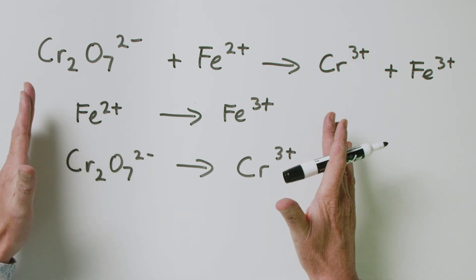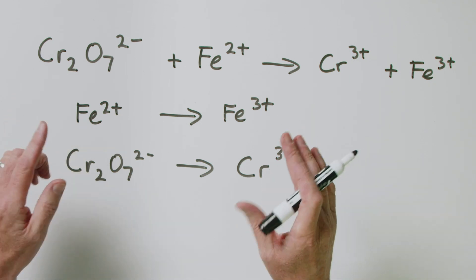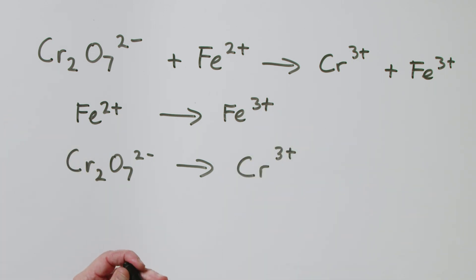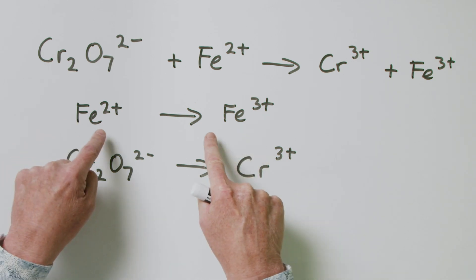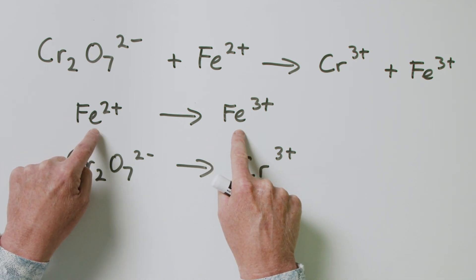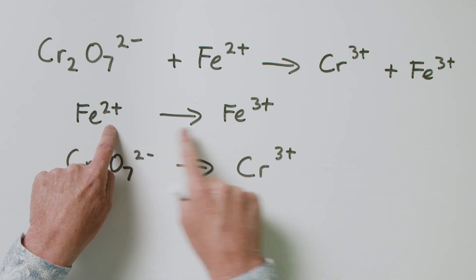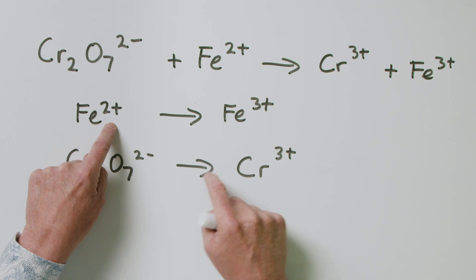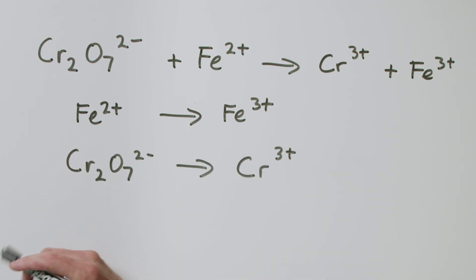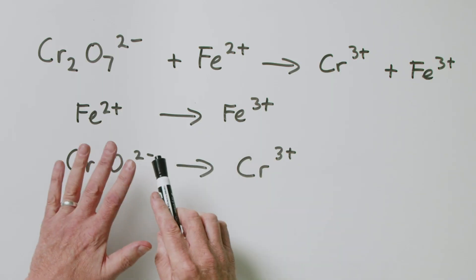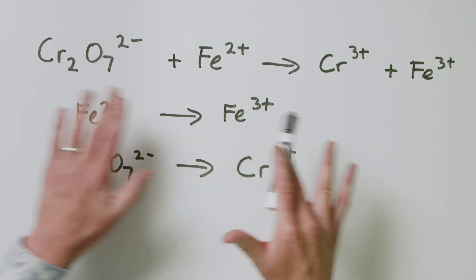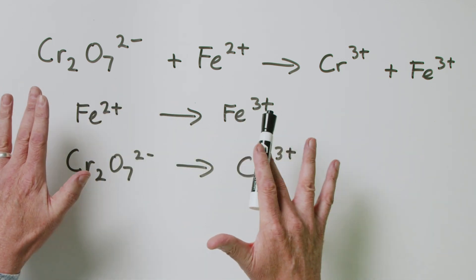Let's balance the top one. First we make sure that the atoms are balanced. We've got one iron here and one iron there, so the mass balance is fine. The charge is not quite right — we've got a 2+ charge on one side and a 3+ charge on the other. How can we balance charge? The answer is we balance charge using electrons. Electrons have a negative charge, so we are free to add electrons to either side of the arrow in order to balance the charge.